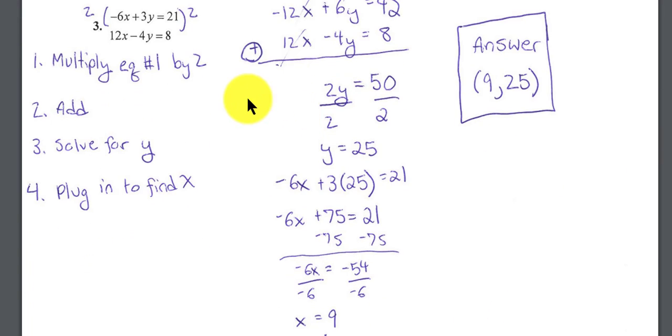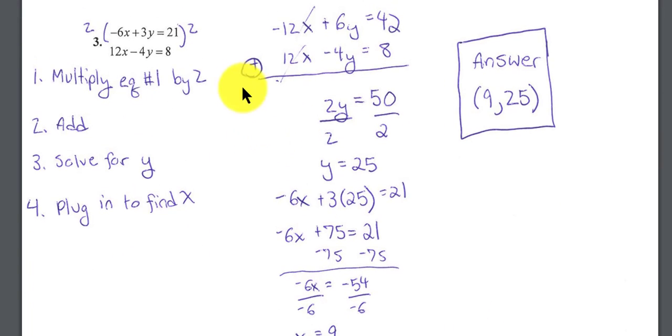The last problem looks like we're going to use the elimination method or the addition method again. If you look, I have a 12x here and a negative 6x. So if I multiply the top equation by 2, you're going to have a negative 12x and a positive 12x, and they're going to eliminate when I add the two equations together.